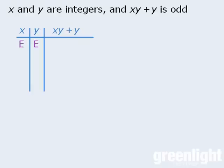x and y can both be even, x can be even and y can be odd, x can be odd and y can be even, or both variables can be odd. So there are four different cases to consider. Now let's see what effect each case has on our expression xy plus y.